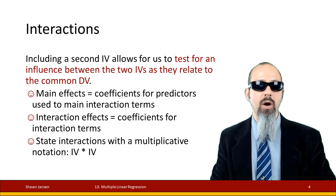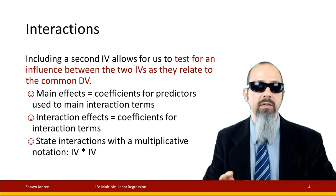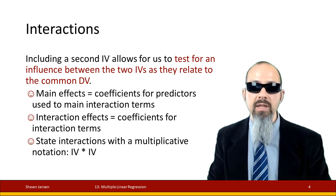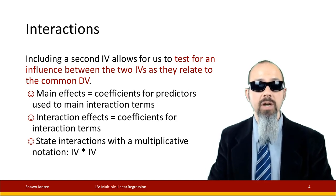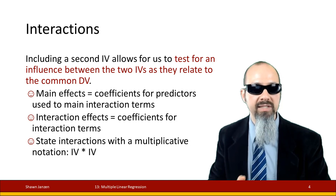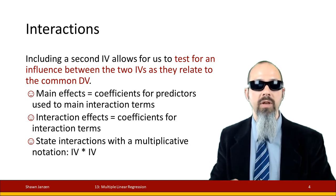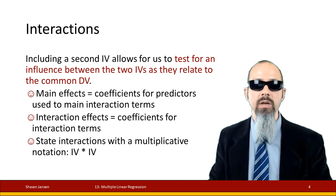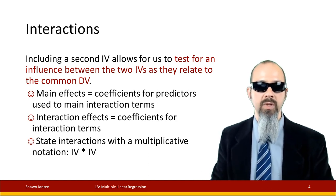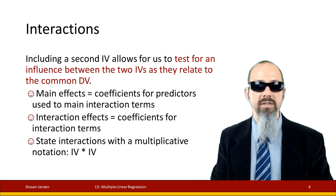Main effects are the coefficient changes on your predictors — the regular variables that we're plugging into the model. The interaction effects are the coefficients of interaction terms. We state interactions in a regression model with a multiplicative notation: independent variable one times independent variable two, variable A times variable B. That's how we go ahead with the written portion on combining these things.